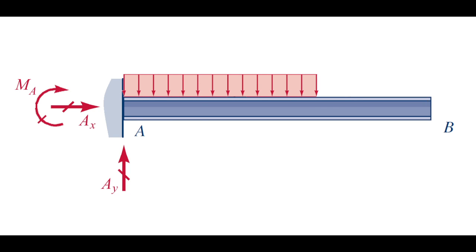What is an indeterminate beam? Is this beam indeterminate or determinate? This beam is fixed at the left end, which has three unknowns: one moment and two forces. In two-dimensional problems, we have three equations. So three unknowns and three equations — I can solve that. So this is a determinate beam.